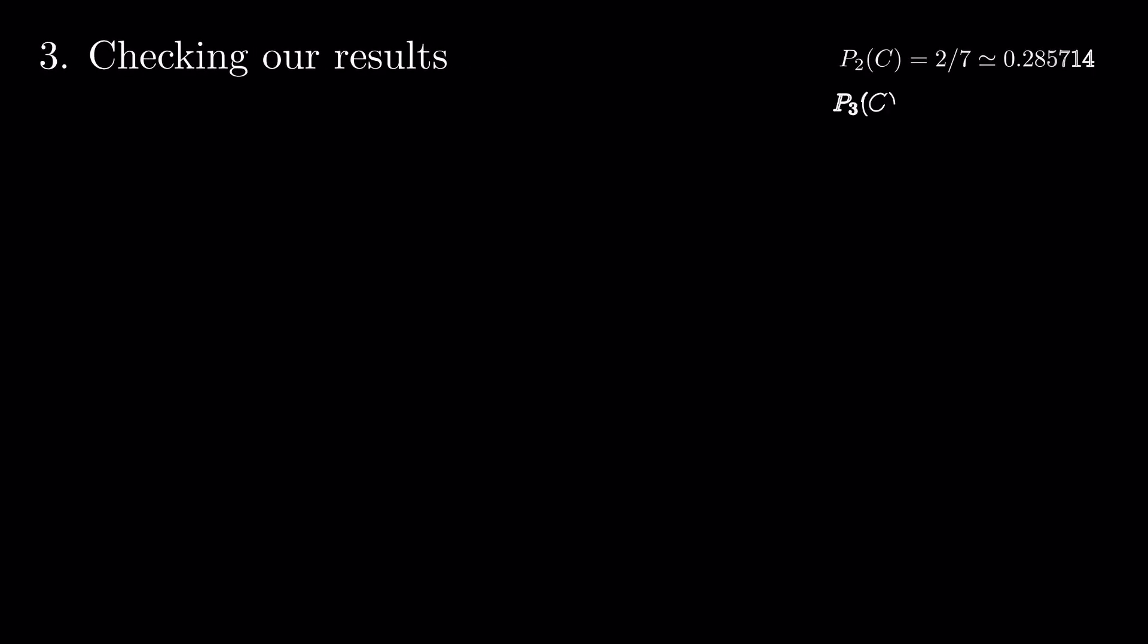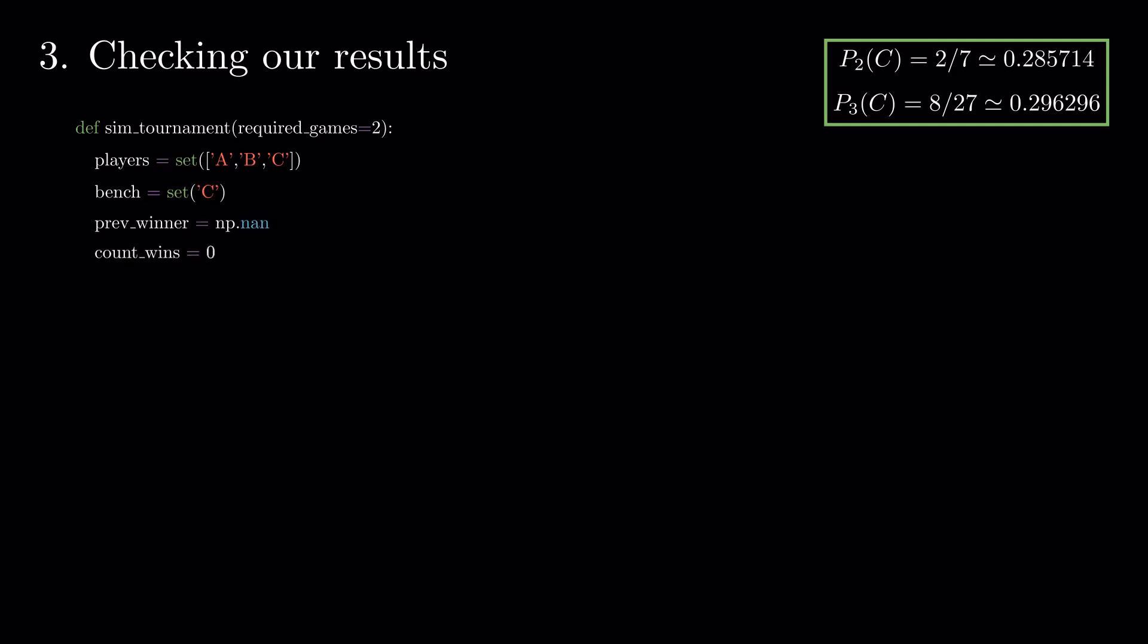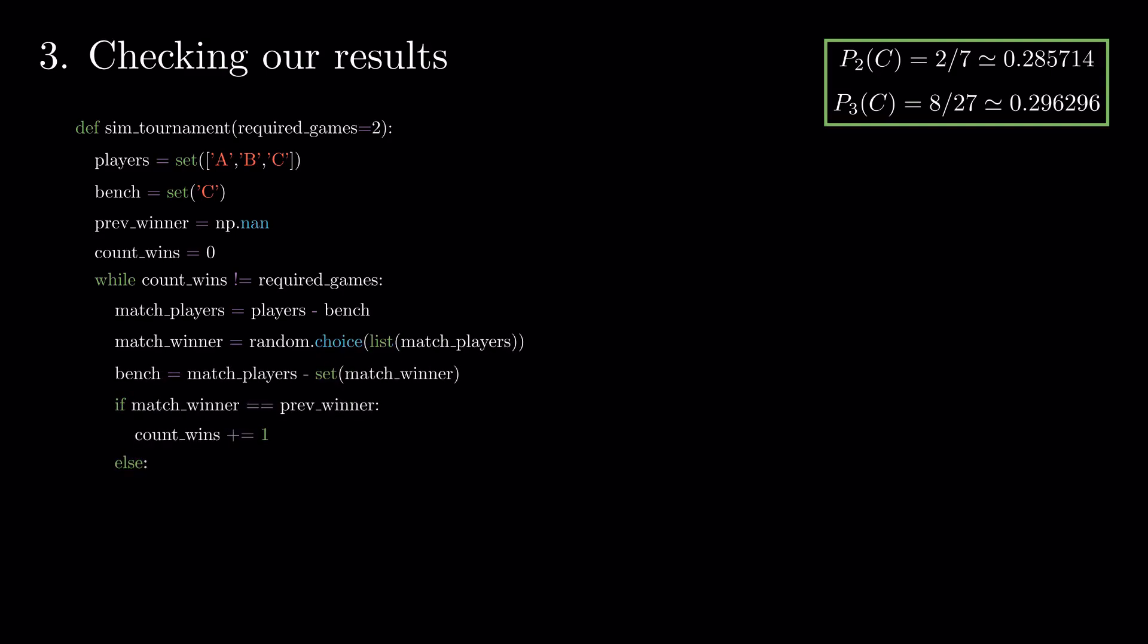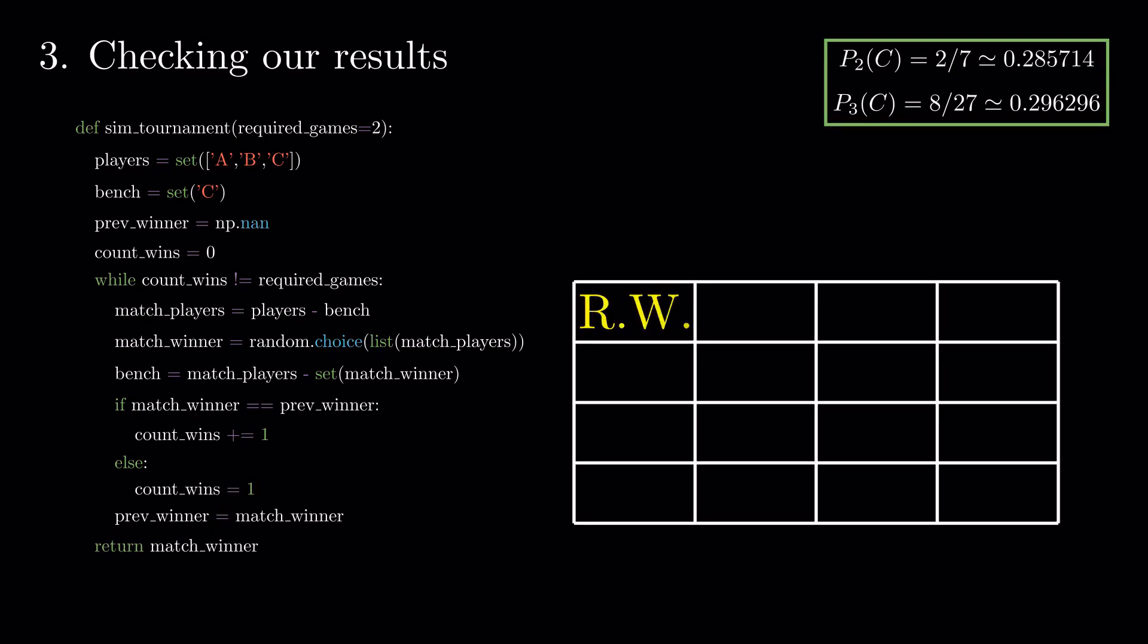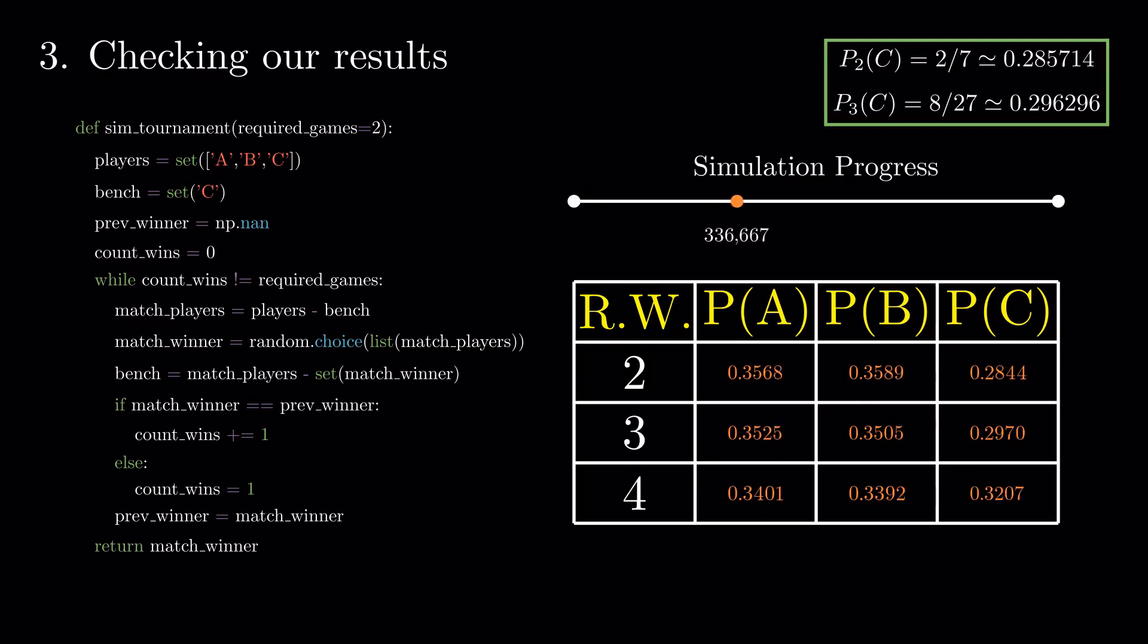We can now check our results by simulating them. You can do this directly, or by considering the tournament as a Markov chain, with the states described as latest game, previous winner, and the number of wins this winner has.